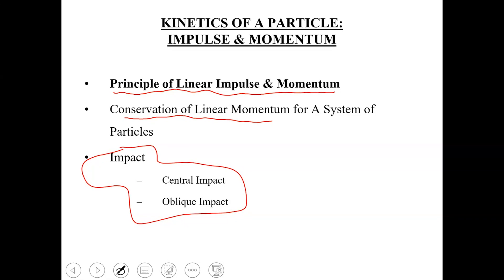When we talk about work-energy methods — whether it is the principle of work and energy or the conservation of energy principle — work and energy are both scalar quantities. So work-energy methods are scalar methods. Instead of applying them along an axis, you apply them between two positions of the particle.